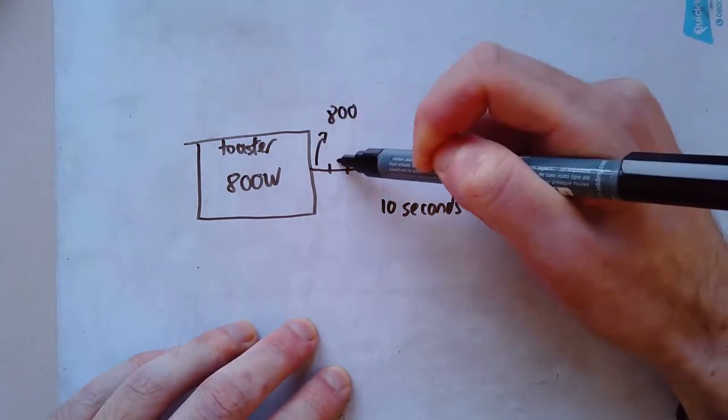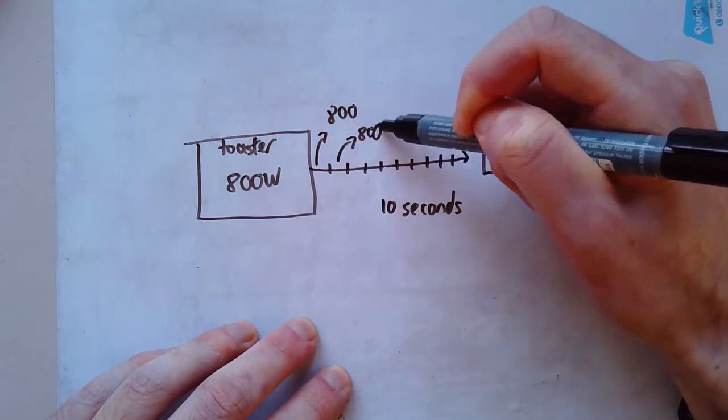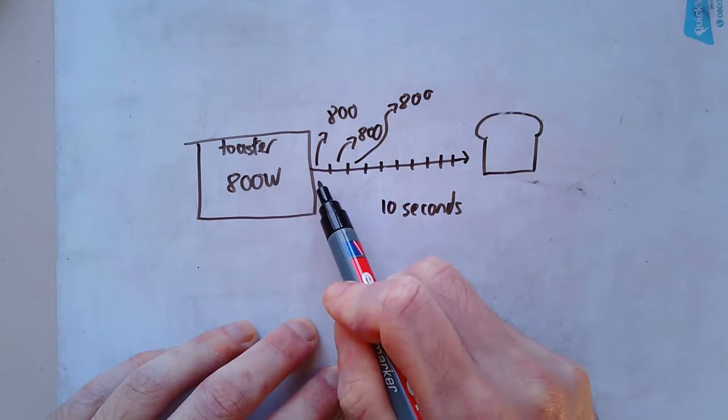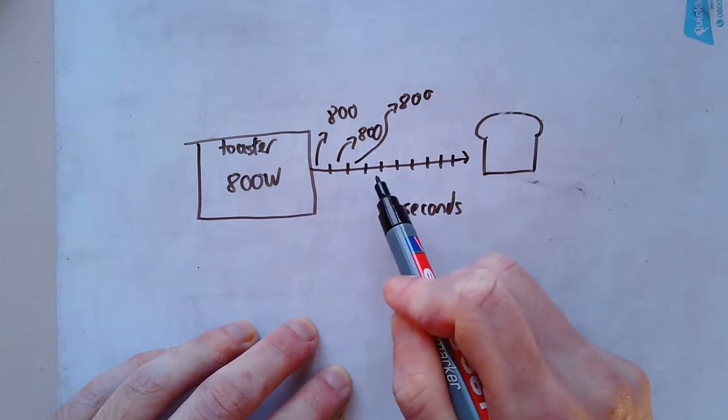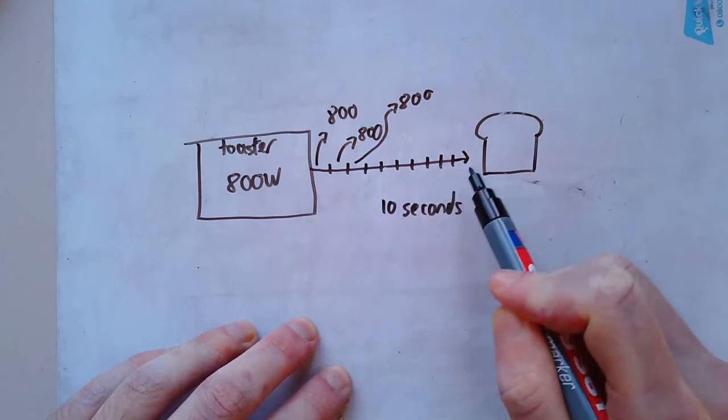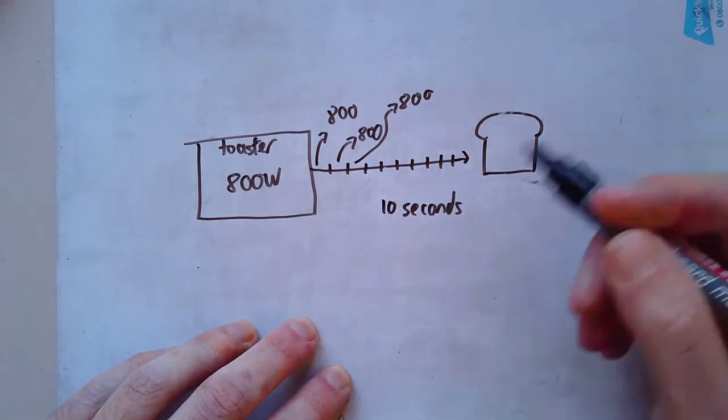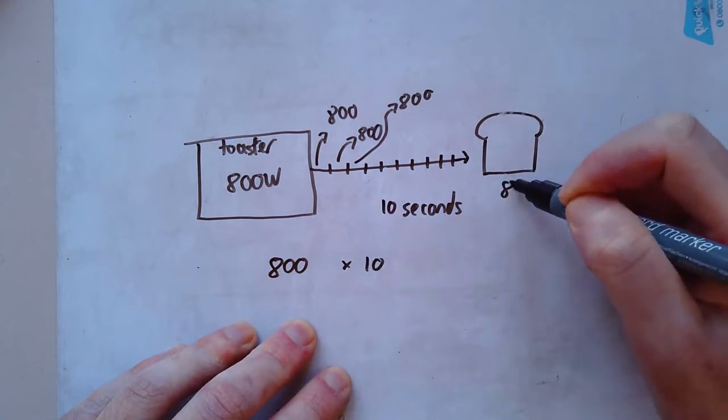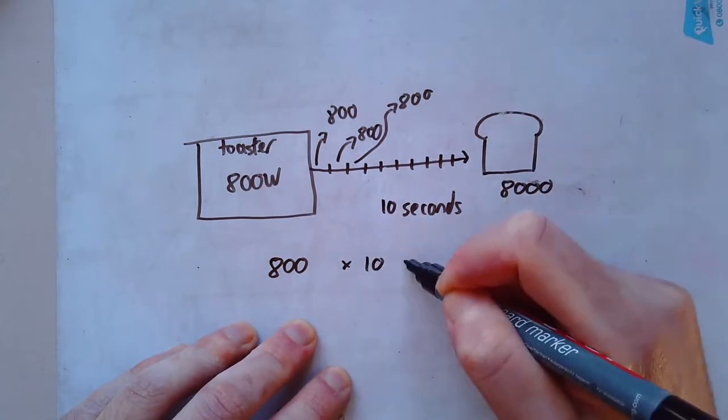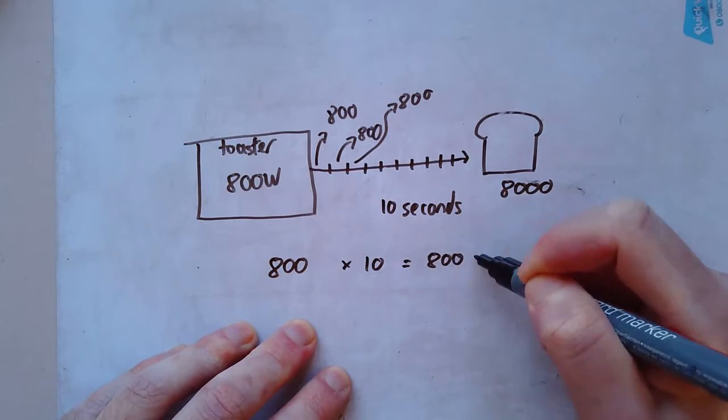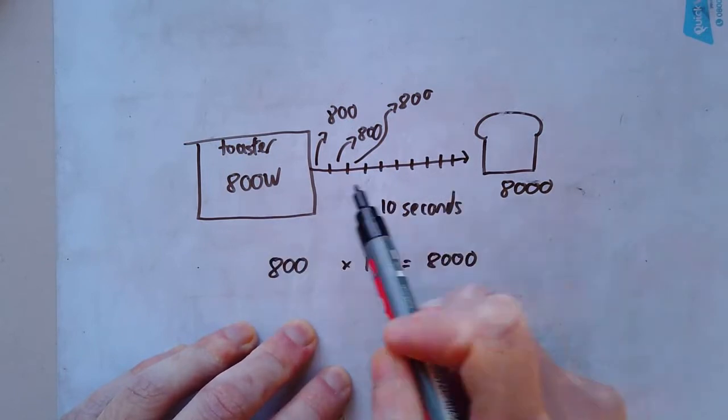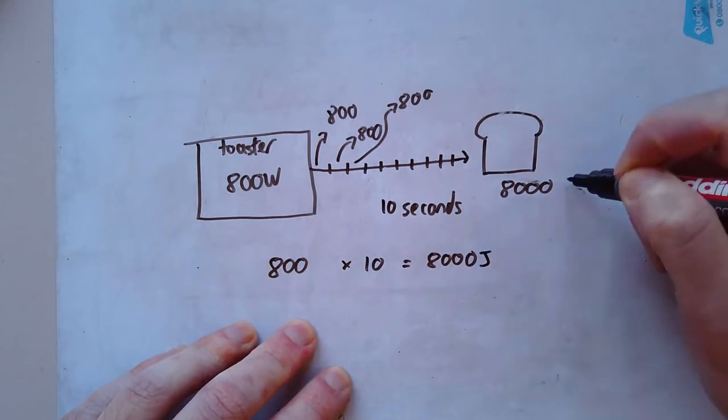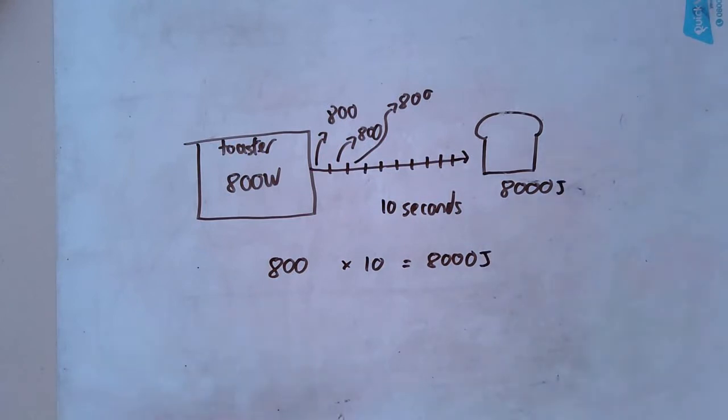So in each one there, 800, 1600, 2400, 3200, etc. All the way up to 8000. Essentially, all I've done is I've just timesed 800 by 10 to get 8000. Each of those seconds is 800 gives me 8000 joules of energy transferred in total across that 10 seconds.